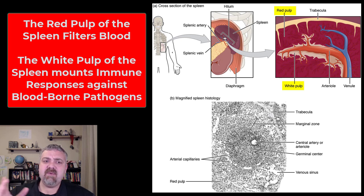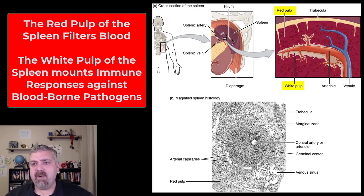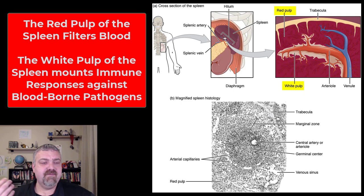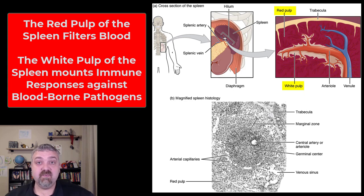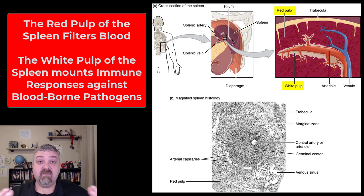So basically, we're going to break it down into two parts: the red pulp and the white pulp. It's often called the filter of the blood because the red pulp is going to have a ton of blood flowing through it, and it's going to have all sorts of macrophages, which are the cells that grab and recycle damaged and old red blood cells.